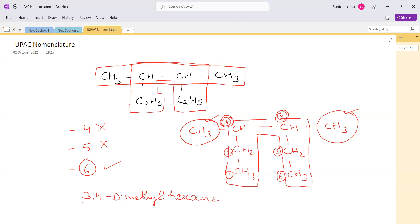out to be as -ane. So the compound becomes 3,4-dimethylhexane. Hope it helps, thanks.